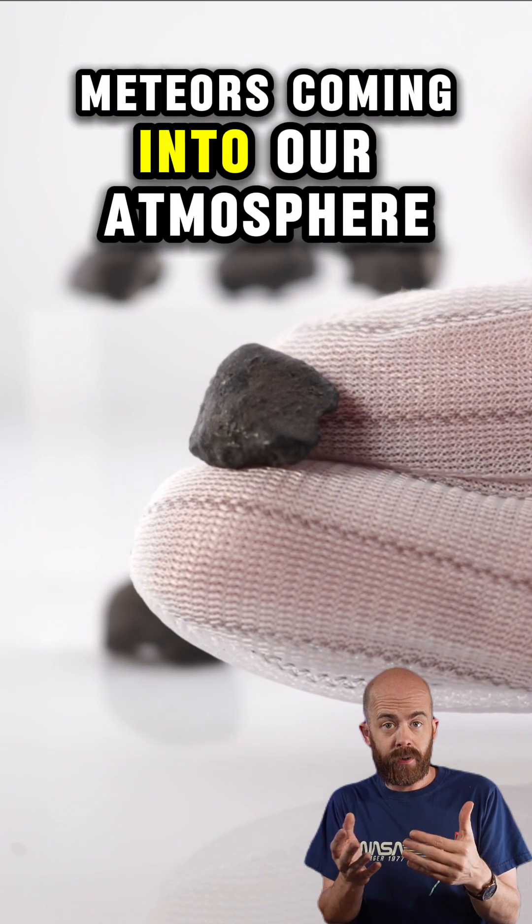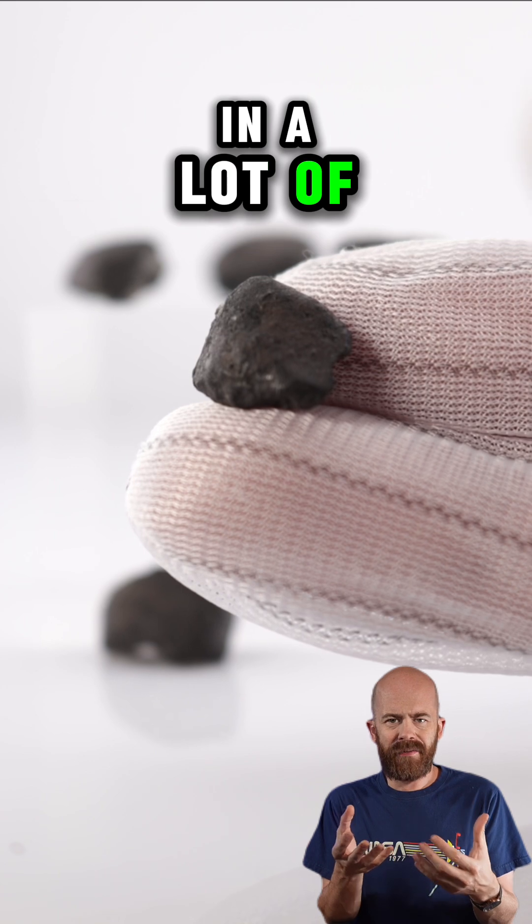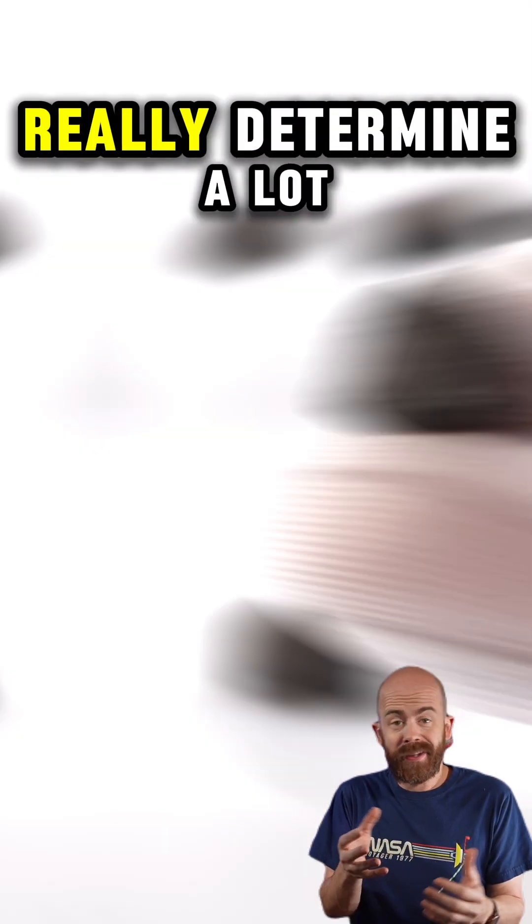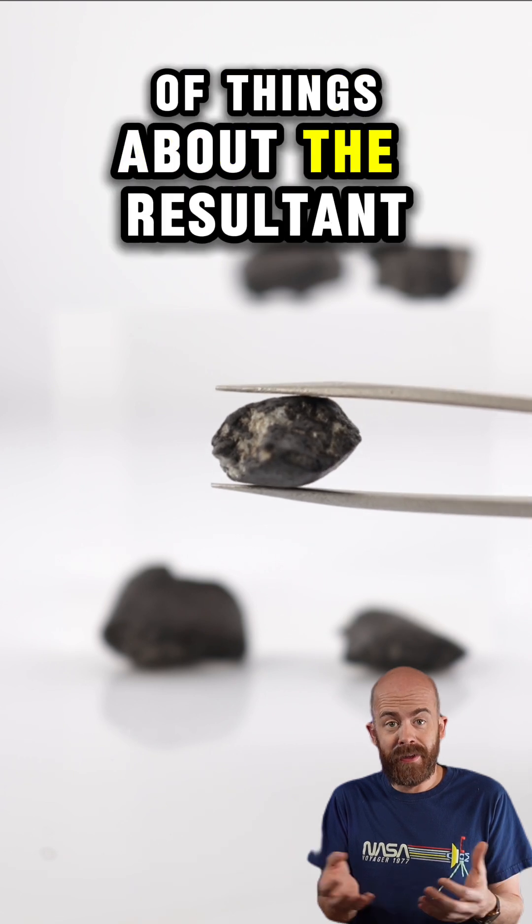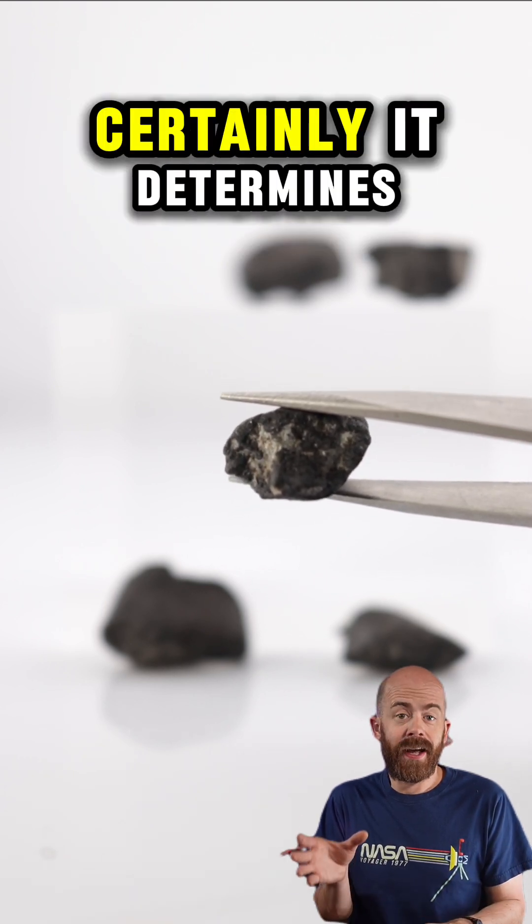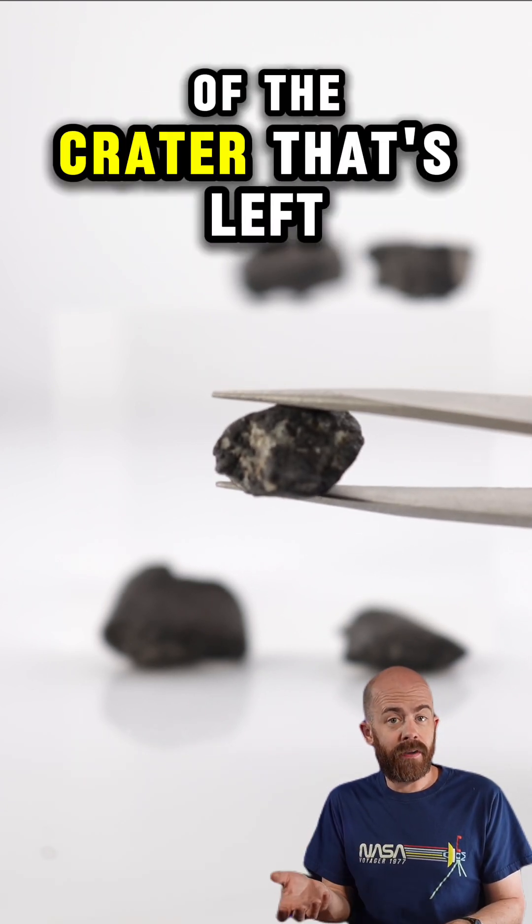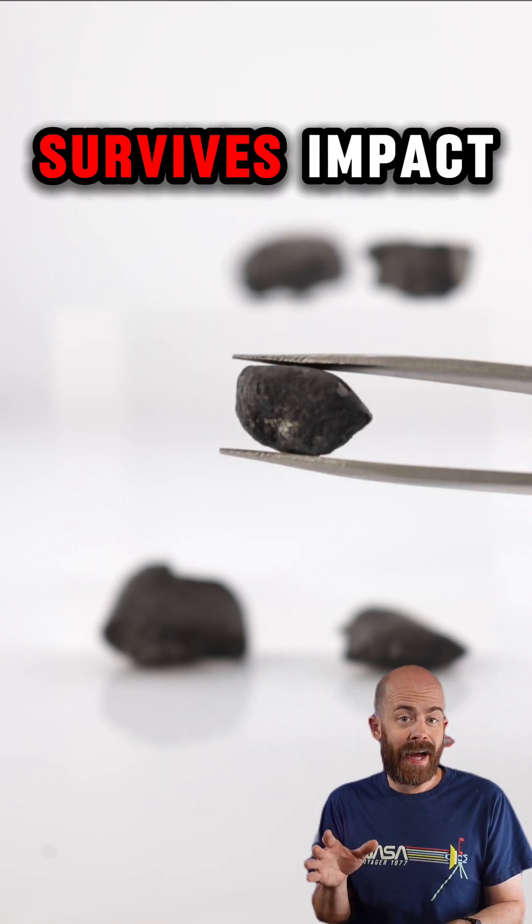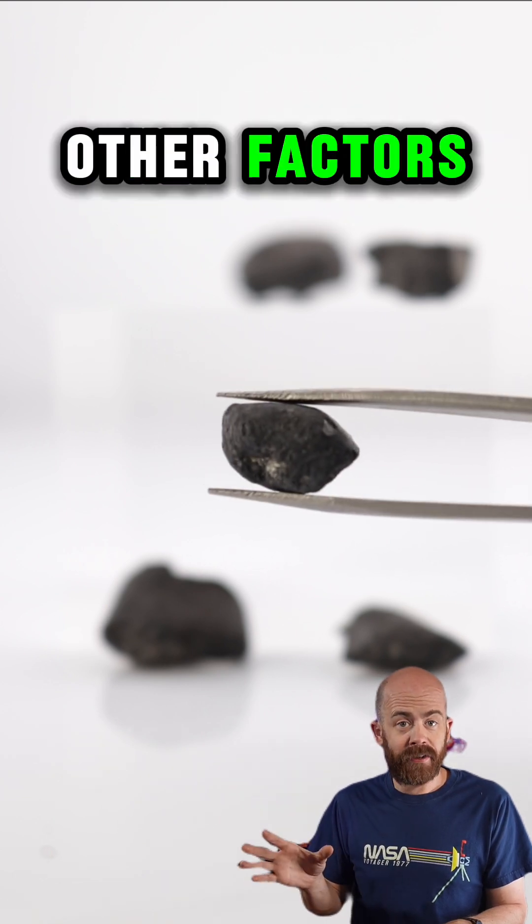Now, when you think of meteors coming into our atmosphere, they can come in at a lot of different angles. And it's that angle of eventual impact that can really determine a lot of things about the resultant meteorite on Earth. Certainly, it determines the size and shape of the crater that's left. But it also determines to some degree how much of the meteorite survives impact along with a lot of other factors.